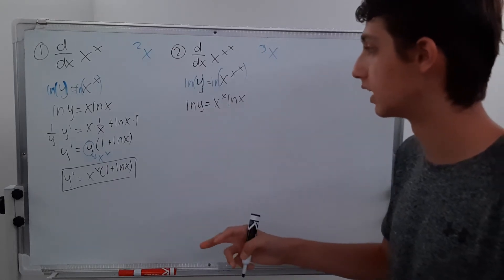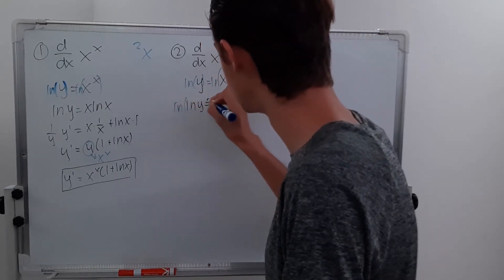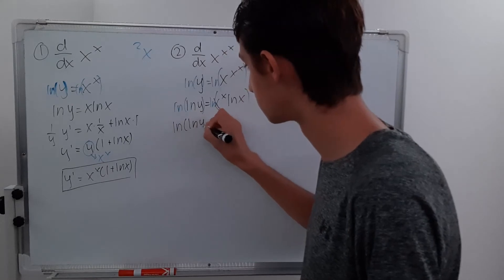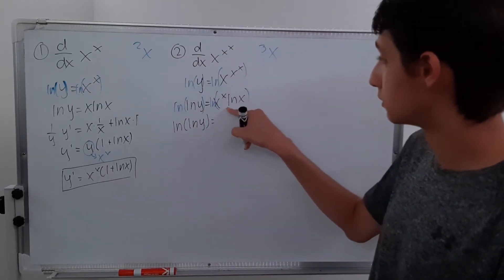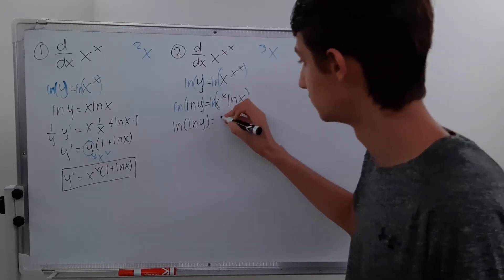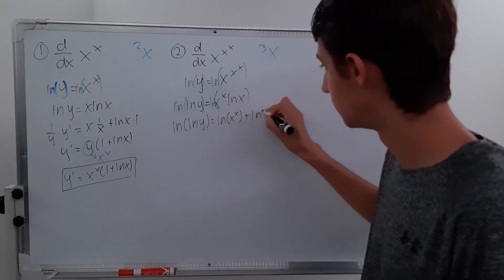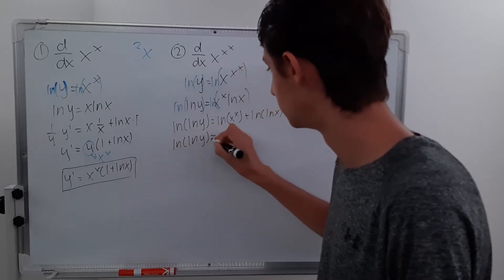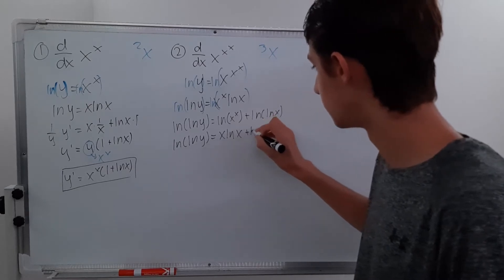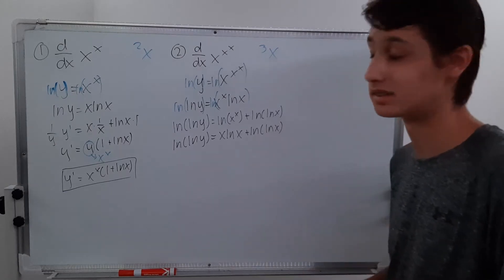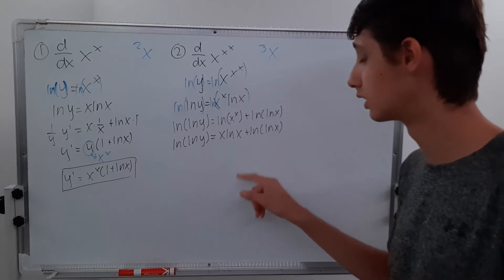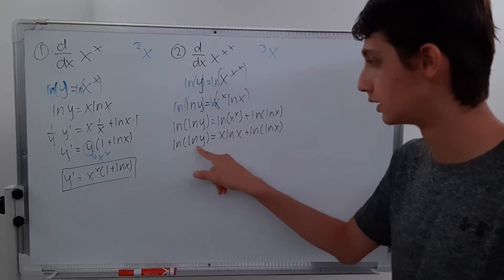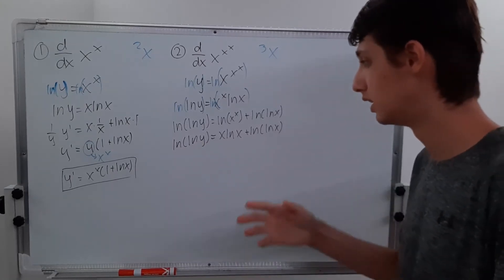We still have x in the exponent, so let's apply the natural log a second time. We end up with ln(ln y) equal to, well, the natural log of a product is just the sum of the natural logs. So we get ln(x^x) plus ln(ln x), which becomes x ln x plus ln(ln x). This looks messy with nested natural logs, but it's really not bad — it's just the chain rule twice, and we add a y prime for implicit differentiation.